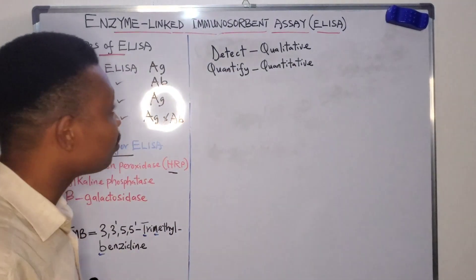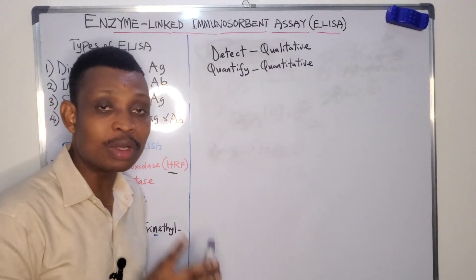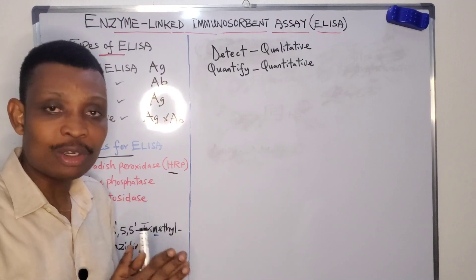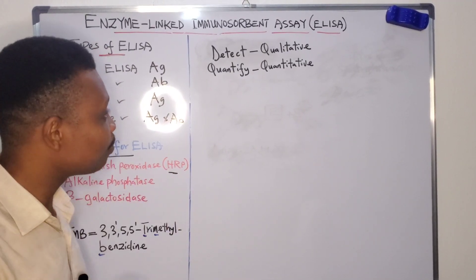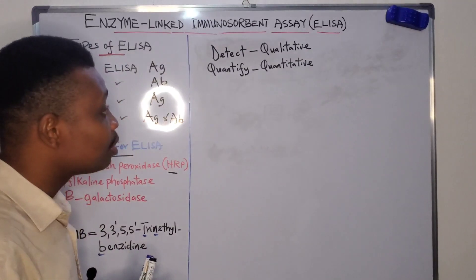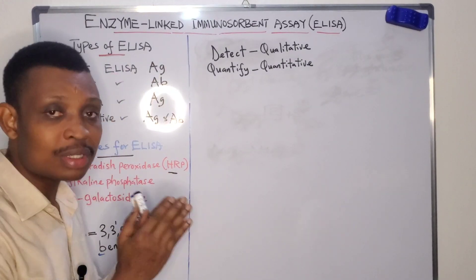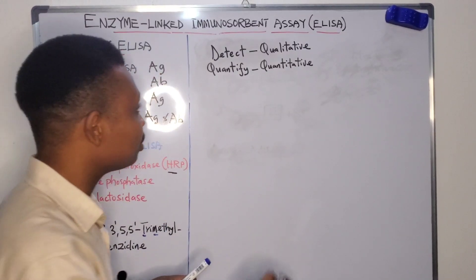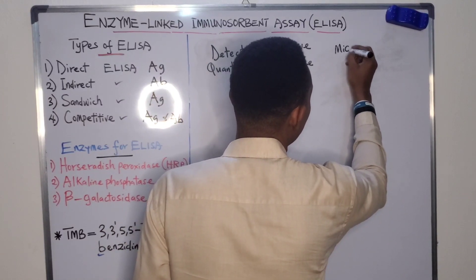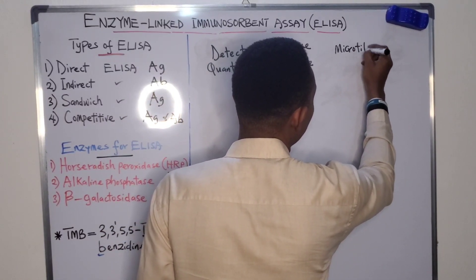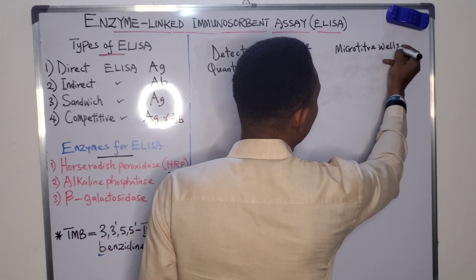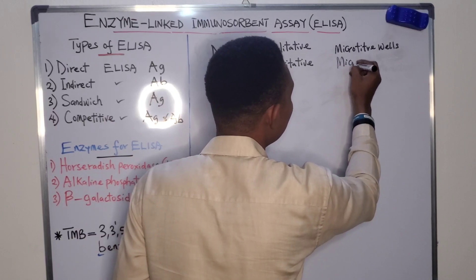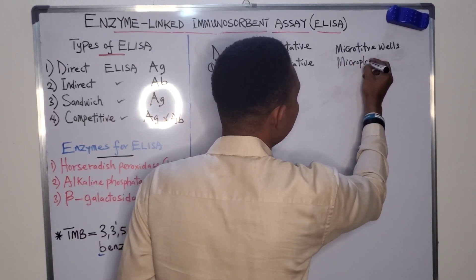ELISA can be used for qualitative and quantitative analysis of specific molecules in biological fluids and tissues. ELISA takes place in microtiter plates — also referred to as microtiter wells or microplate wells.